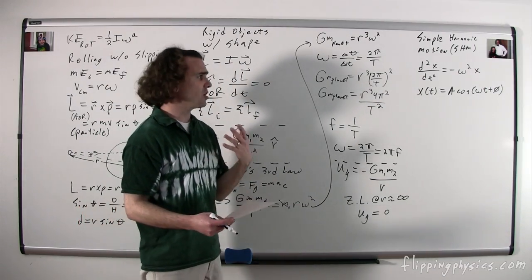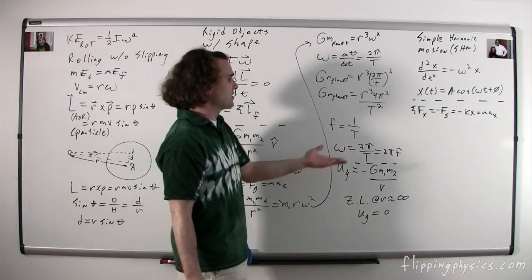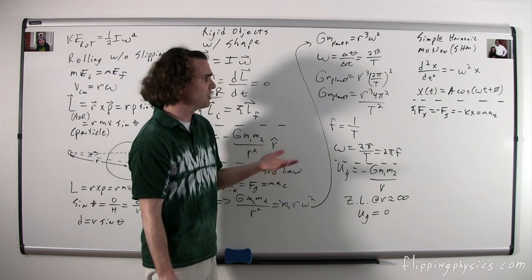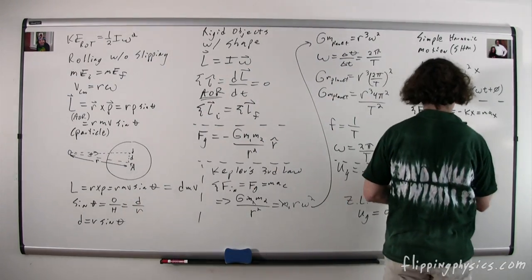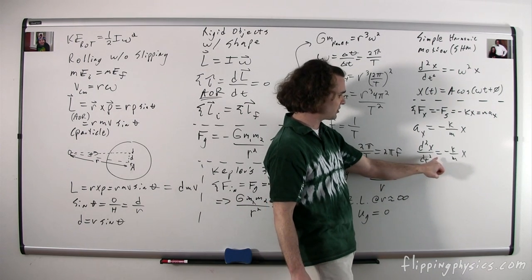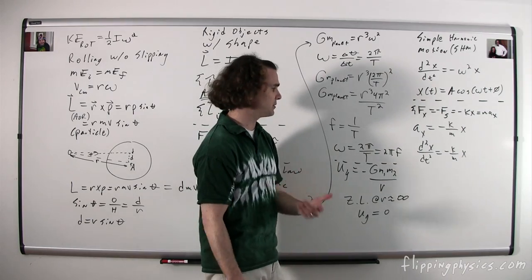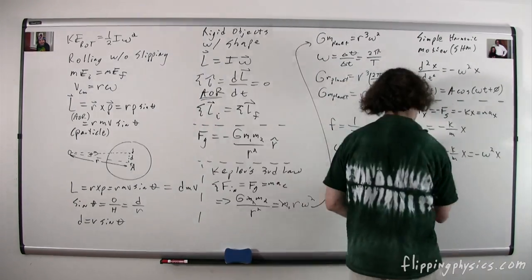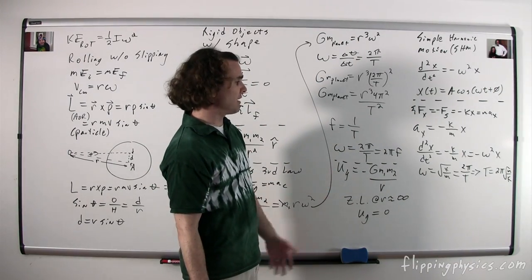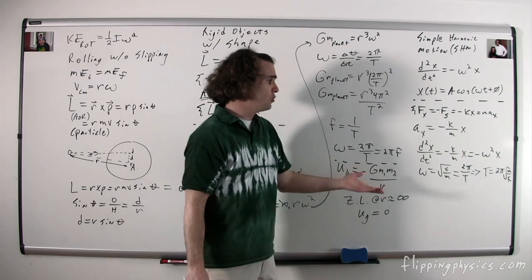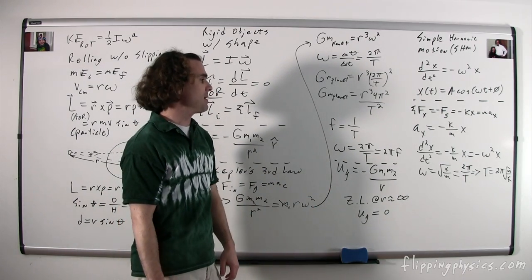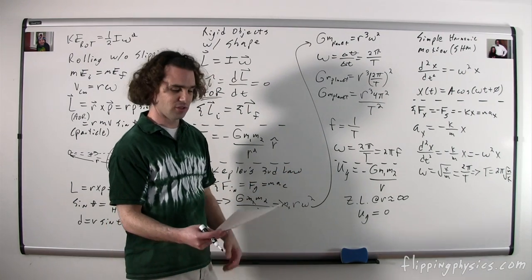For a mass-spring system: the net force in x equals negative kx = ma, so the acceleration equals negative (k/m)x. Comparing with the SHM condition, the angular frequency ω = √(k/m). Since ω = 2π/T, the period of a mass-spring system is T = 2π√(m/k). This same approach — deriving ω from the equation of motion — can be used for anything in simple harmonic motion.